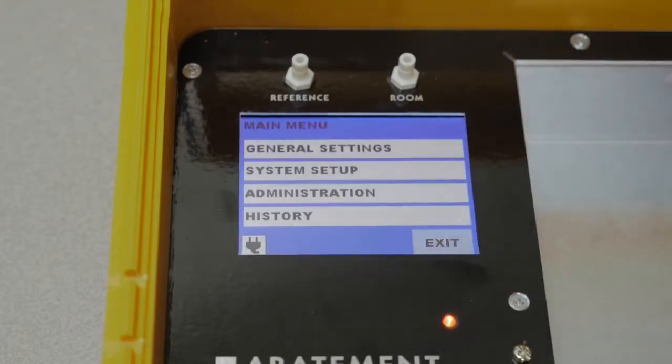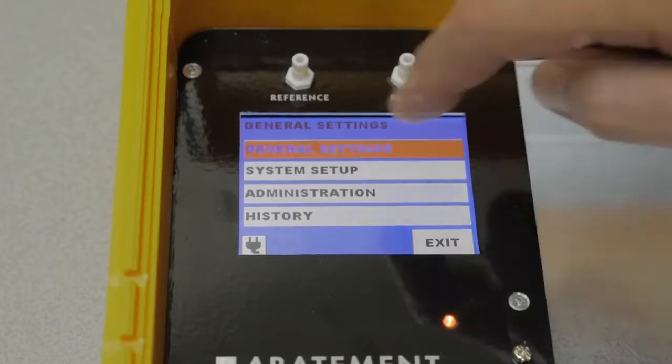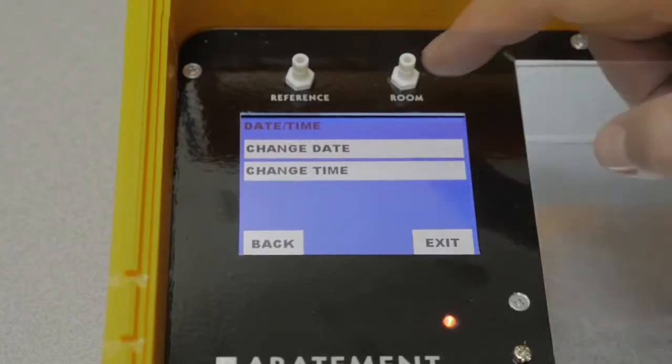Going through the menu button, go next to the general settings, then we'll select date and time, change date.